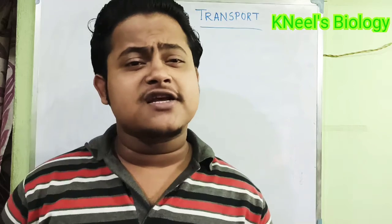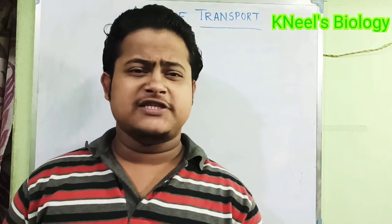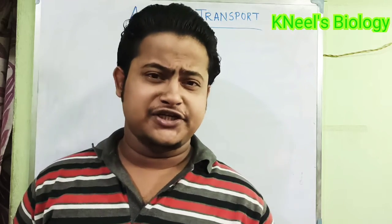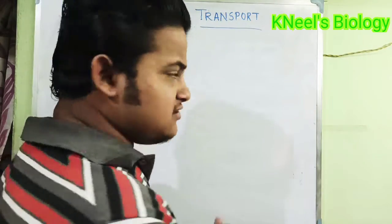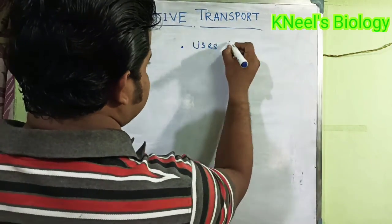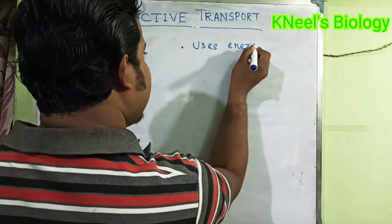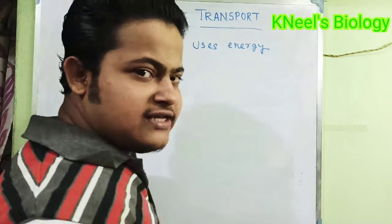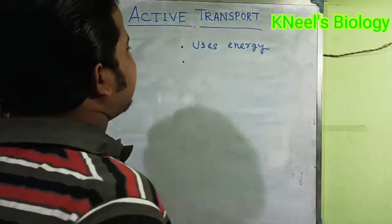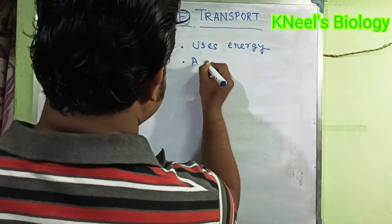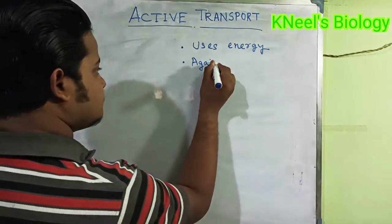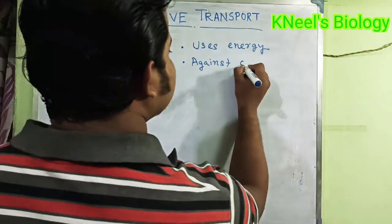In passive transport, energy is not needed — it is excluded — and passive transport takes place down its concentration gradient. But in the case of active transport, the principles are two: first, it uses energy by ATP hydrolysis, and second, it takes place against its concentration gradient.